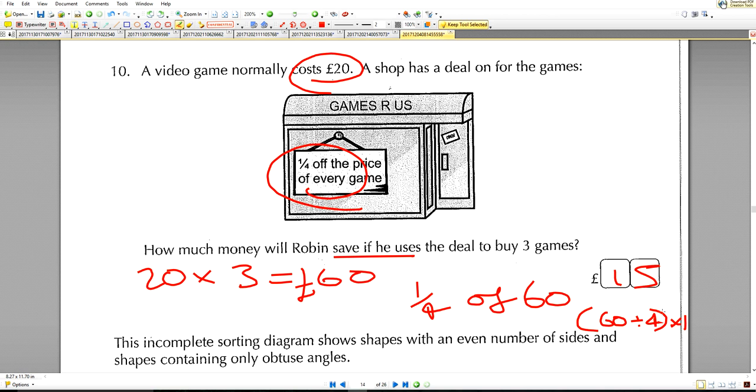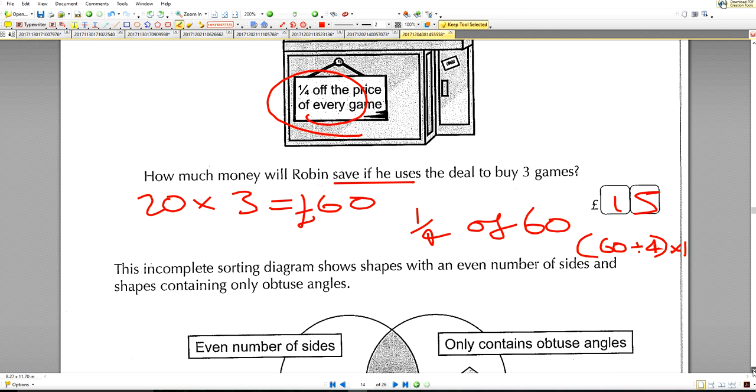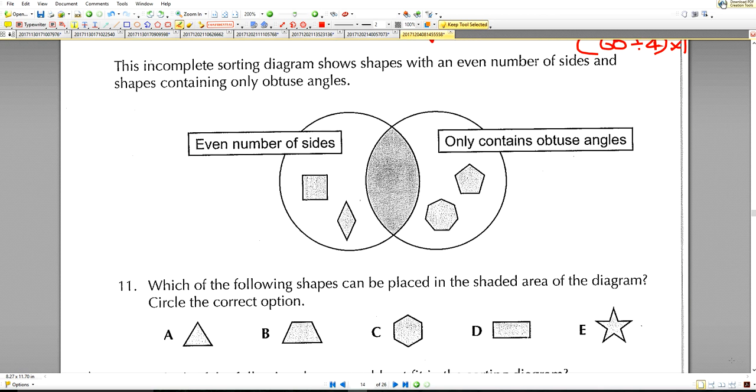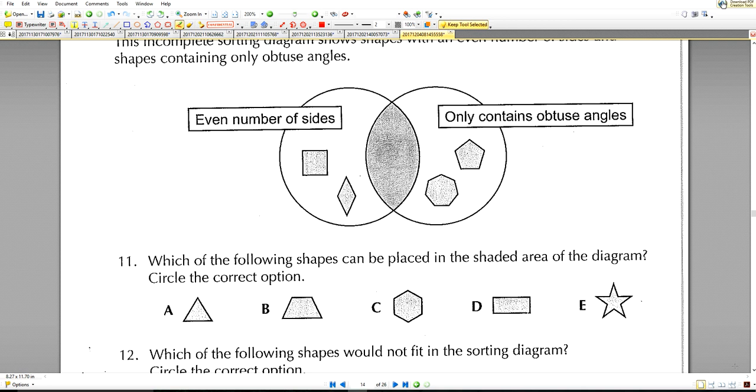This incomplete sorting diagram shows shapes with an even number of sides and shapes containing only obtuse angles. Which of the following shapes can be placed in the shaded area of the diagram? It's going to have even number of sides and only contains obtuse angles. Obtuse angles are angles which are more than 90 or less than 180. Not this one—this one's got two obtuse angles and acute angles here. Not that one—these are all right angles.